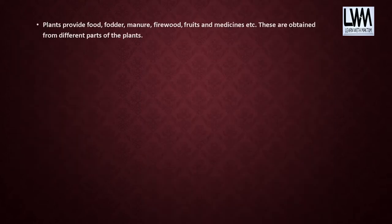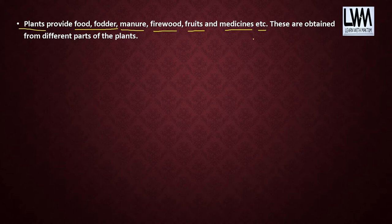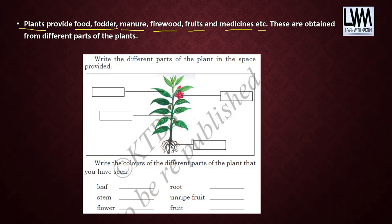What are the uses of plants? Plants provide us food, fodder, manure, firewood, fruits, and medicines, and more. From plants we get food; manure is also prepared from plants; trees give us wood which is used for preparing paper; we get fruits from plants; and some plants are used for medicines.